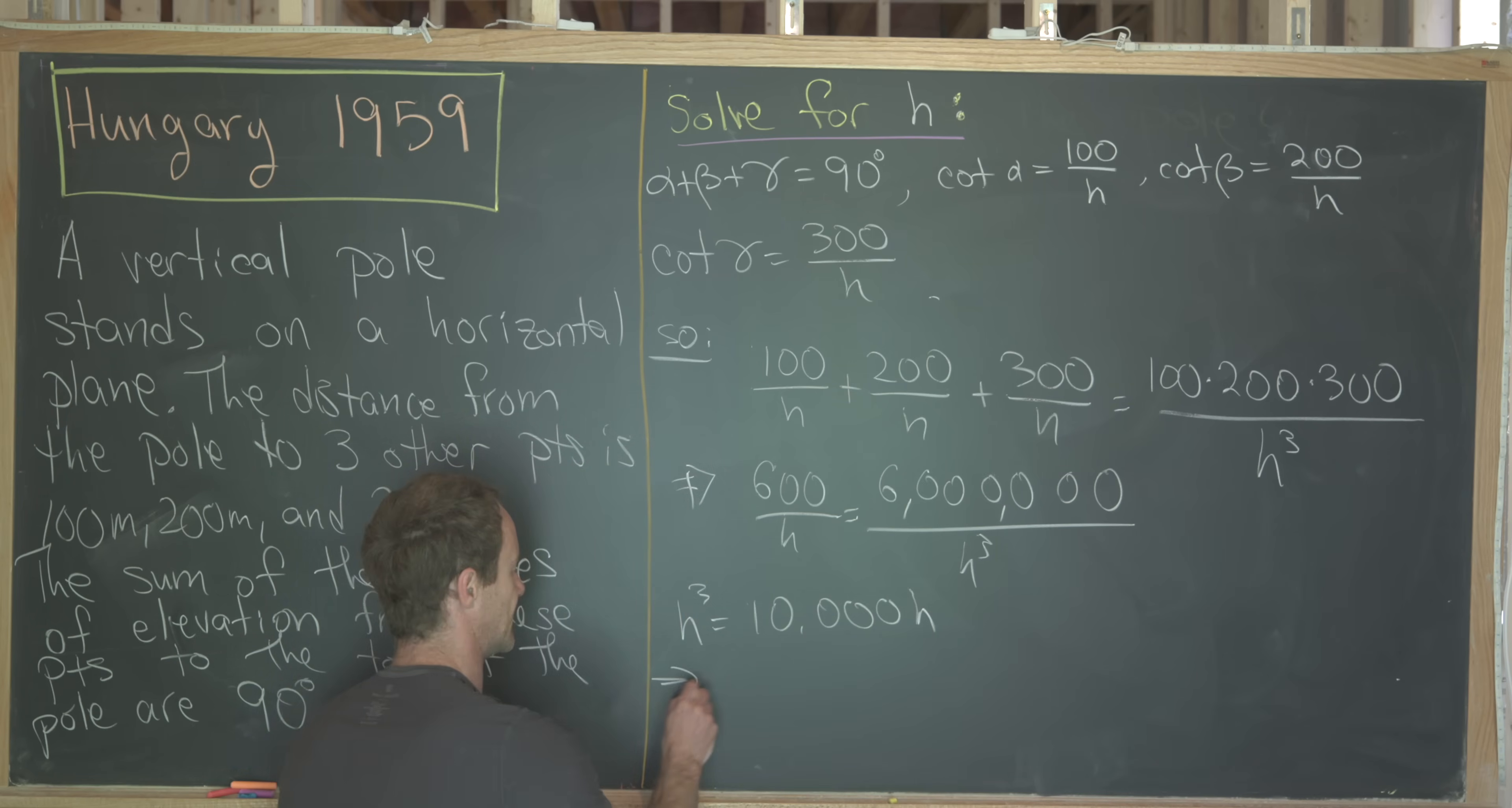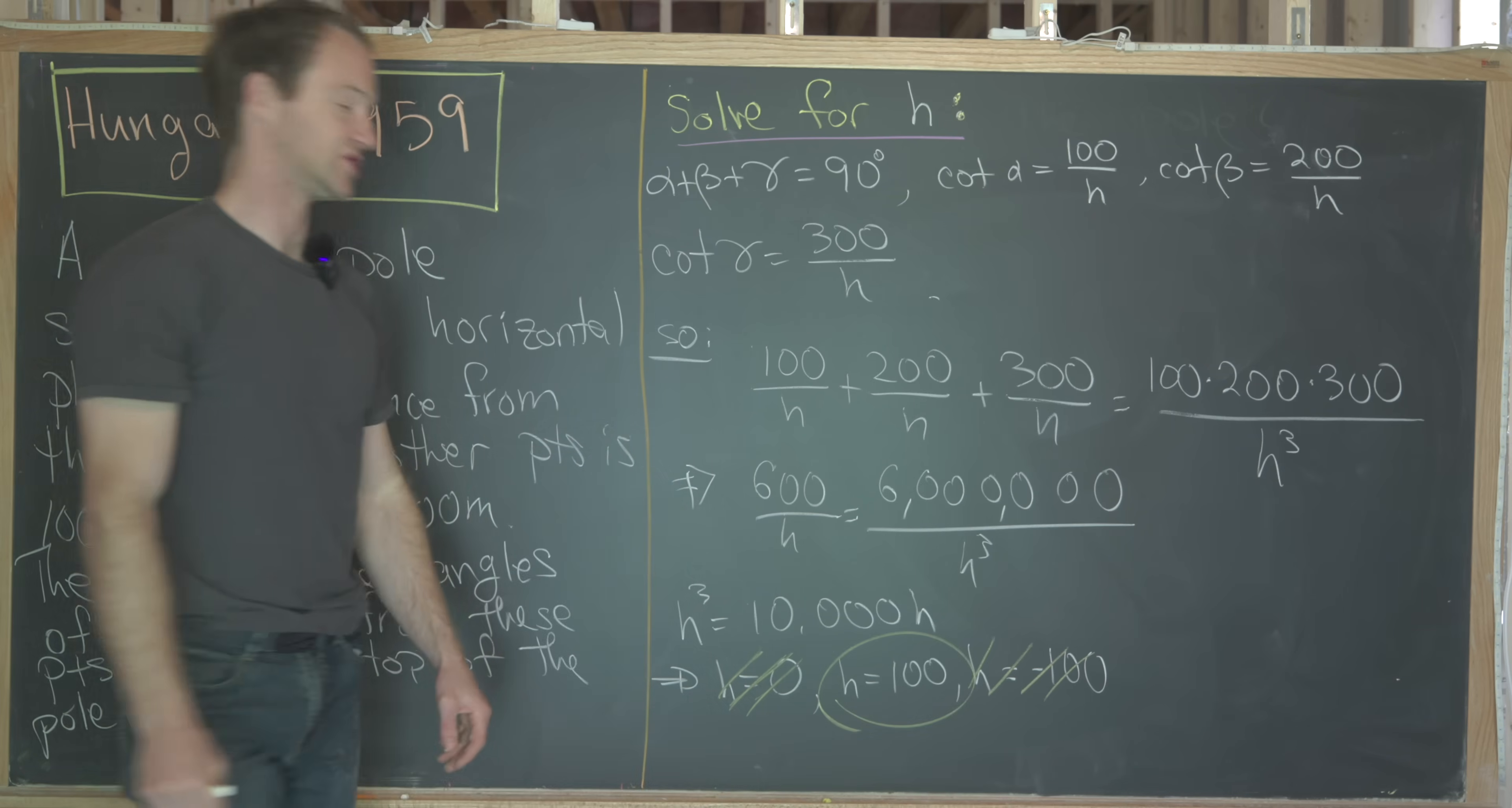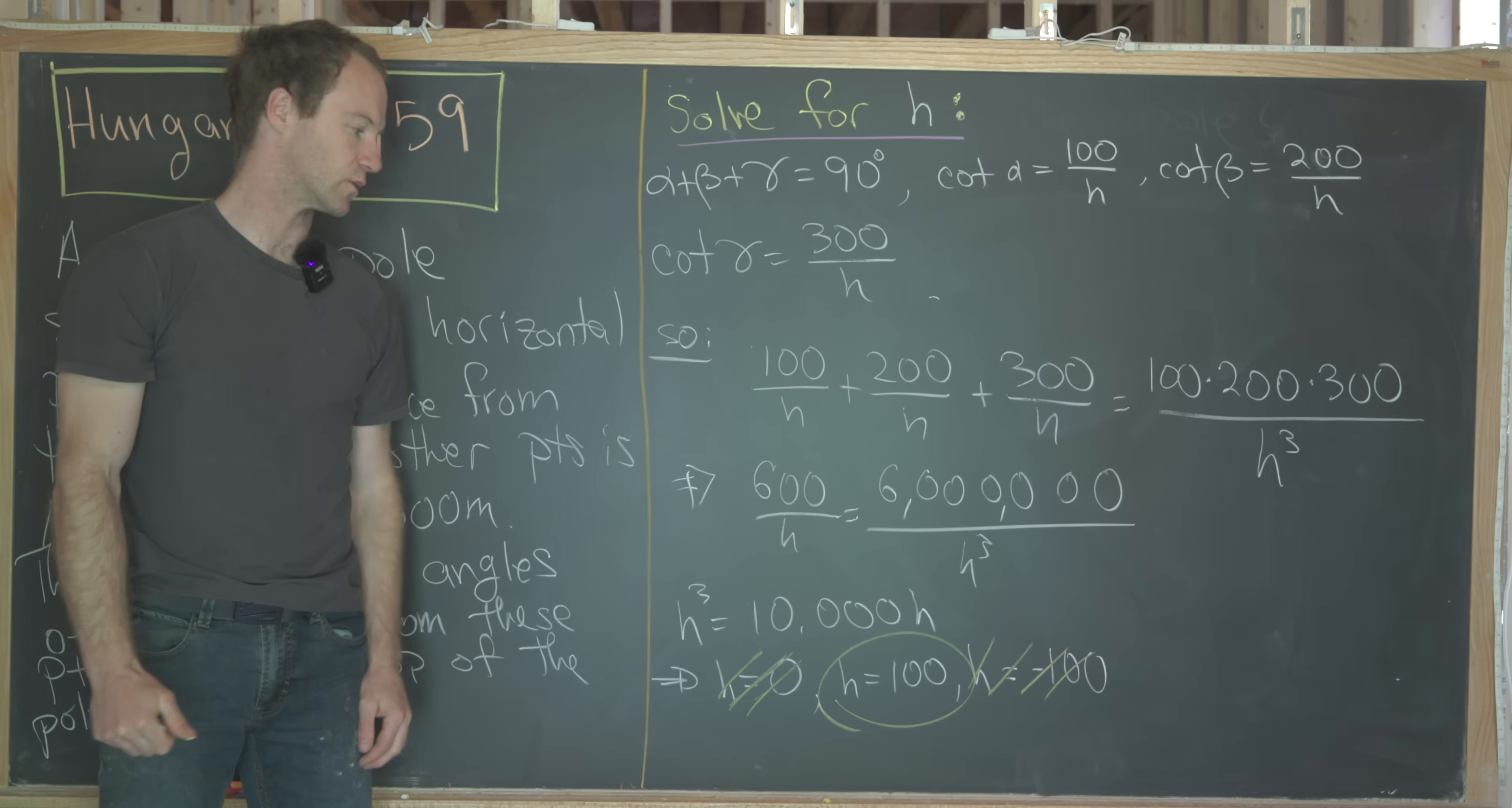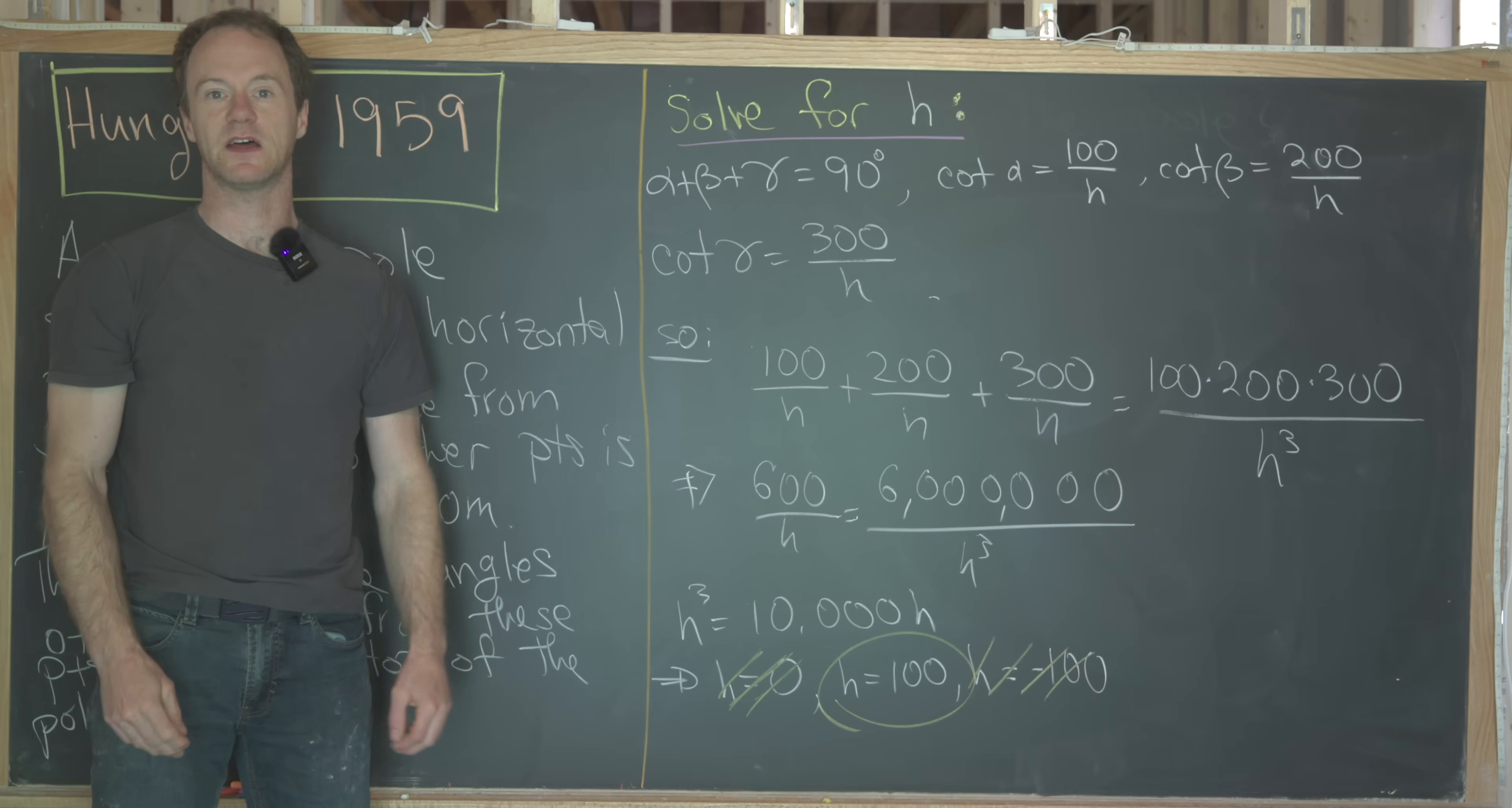But we can solve this and we'll get that that means h equals 0, h equals 100, or h equals negative 100. But now notice that it's impossible for h to be equal to 0 just given our physical setup over here. Furthermore, it's impossible for h to be negative 100 given that we're talking about the height of something. So that leaves us with the only possibility which is the height of our original pole was 100 meters. And that's a good place to stop.